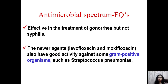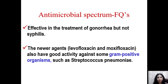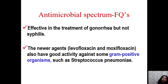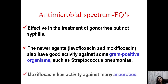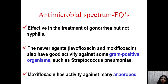Fluoroquinolones also have activity against Haemophilus ducreyi and Chlamydia trachomatis, which cause sexually transmitted diseases. Newer agents — levofloxacin and moxifloxacin — have good activity against gram-positive organisms like Streptococcus pneumoniae and also against anaerobes. These are called respiratory fluoroquinolones and are used for community-acquired pneumonia, tuberculosis, and other respiratory indications.